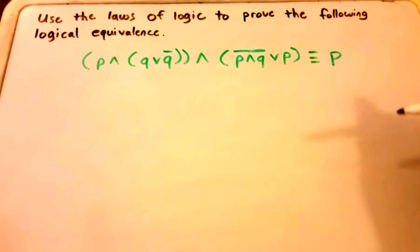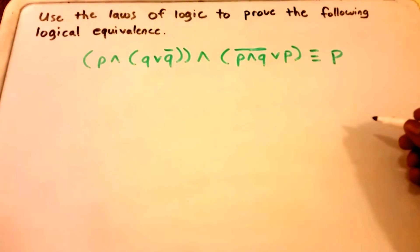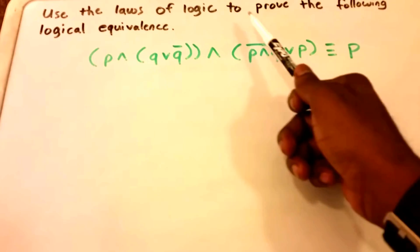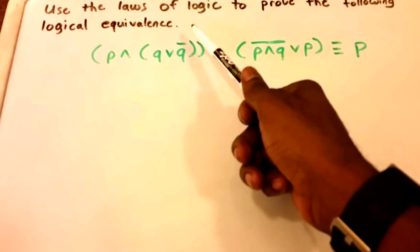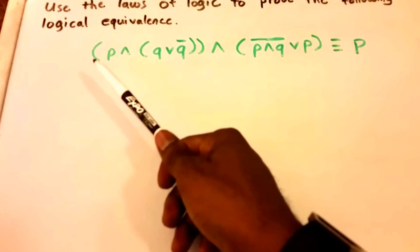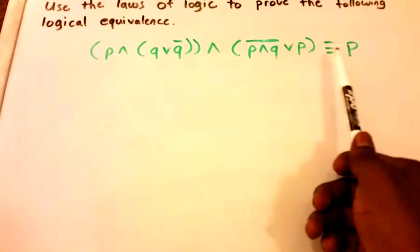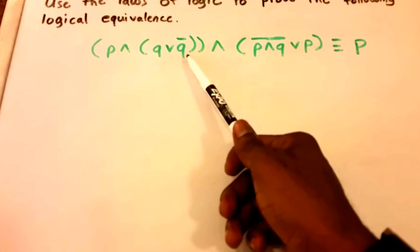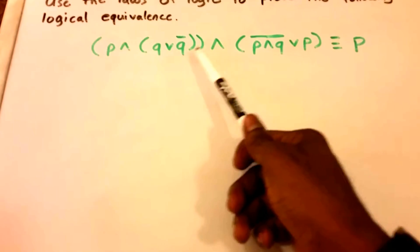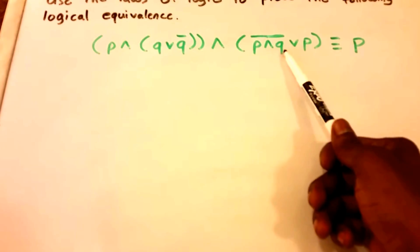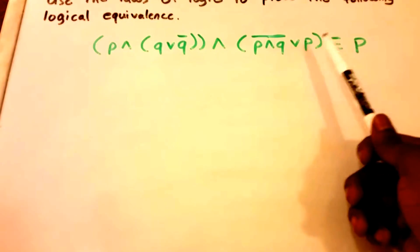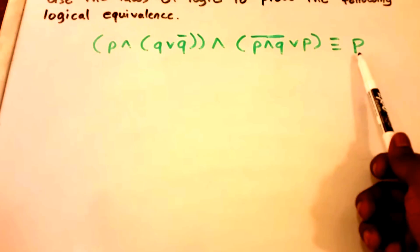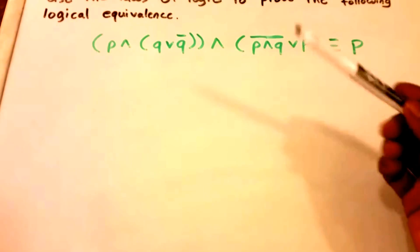Hey guys, welcome to this video on logical equivalences. We want to use the laws of logic to prove the following logical equivalence — shown here in green: (P∧Q) ∨ (¬Q∧¬P∧Q) ∨ P is logically equivalent to just P.